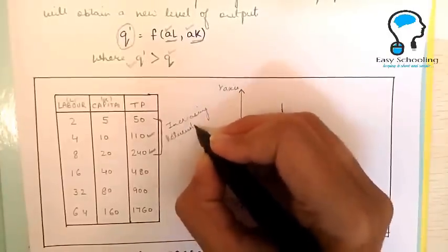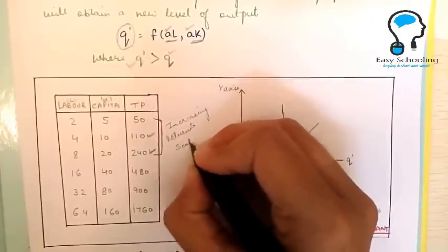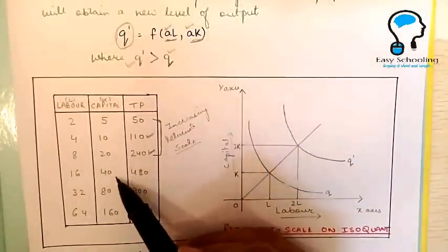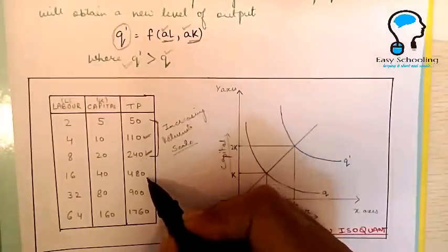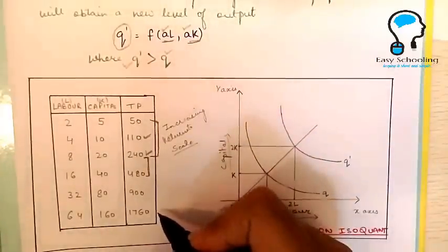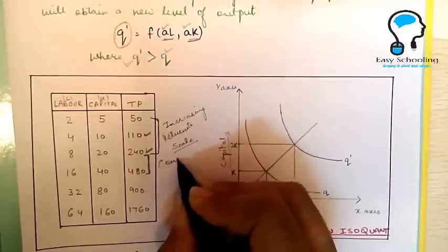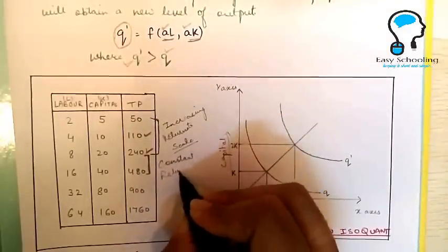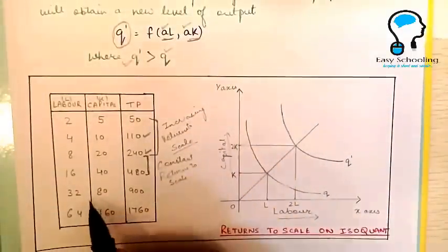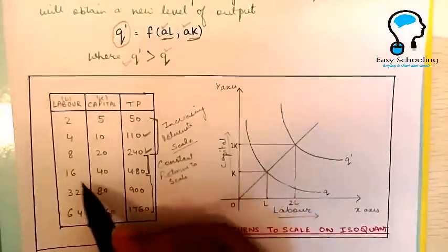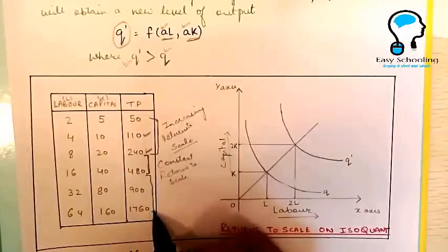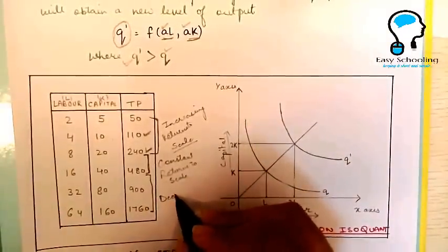Further, when we double the inputs from 8 to 16 and 20 to 40, we see that the output has also doubled. When the proportionate change in input and proportionate change in output are equal, this stage is called Constant Returns to Scale. And when the proportionate increase in output is less than the proportionate increase in input, this stage is called Decreasing Returns to Scale.